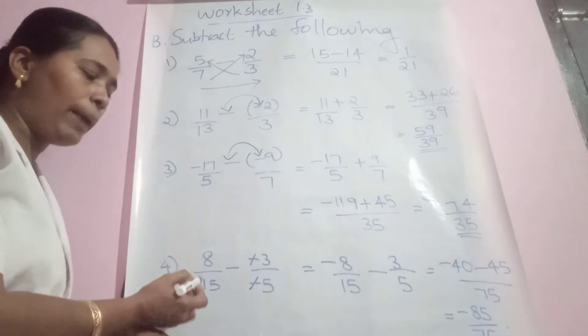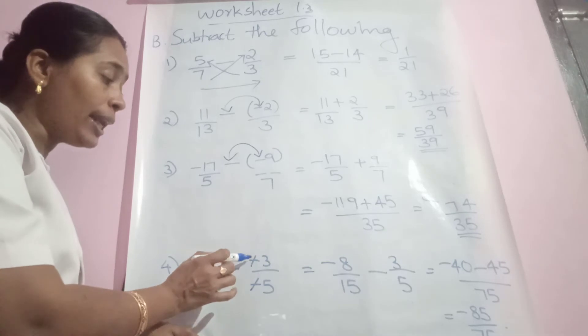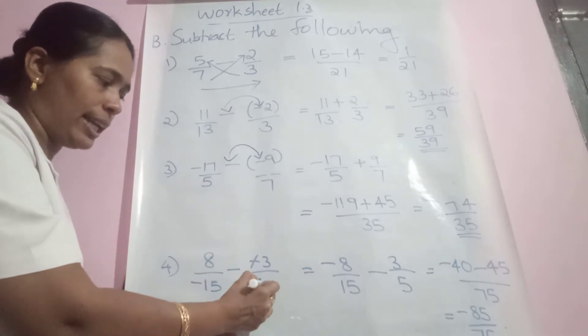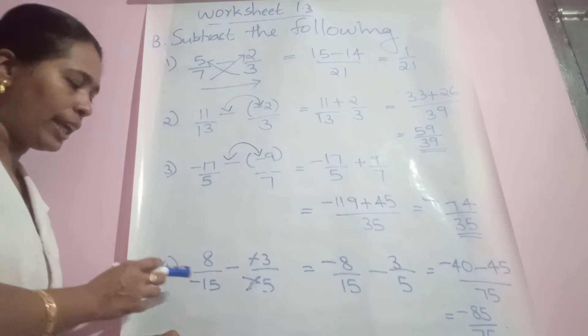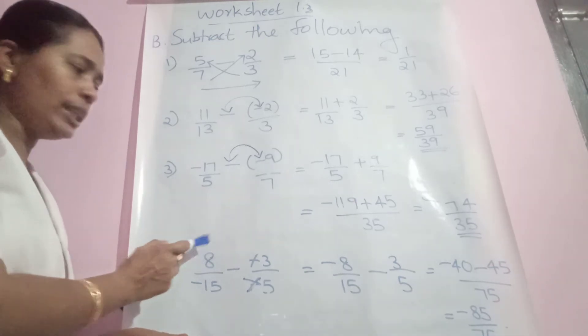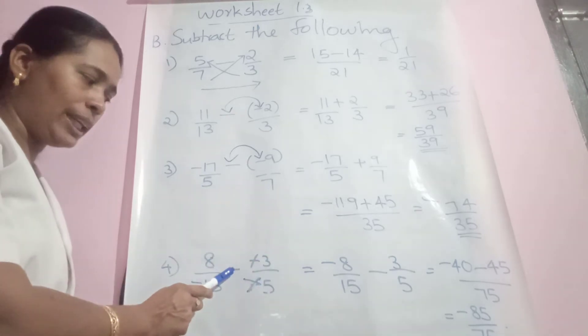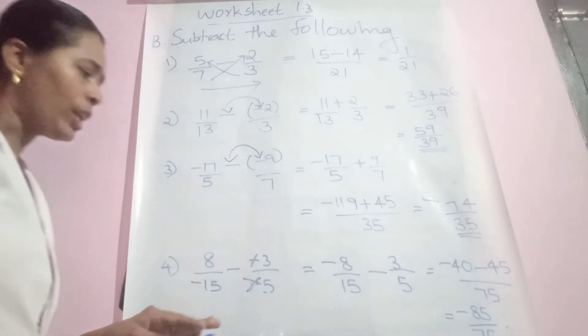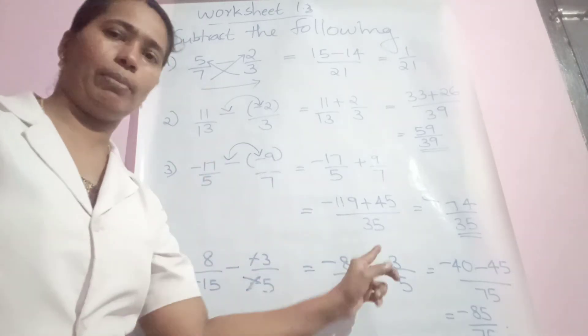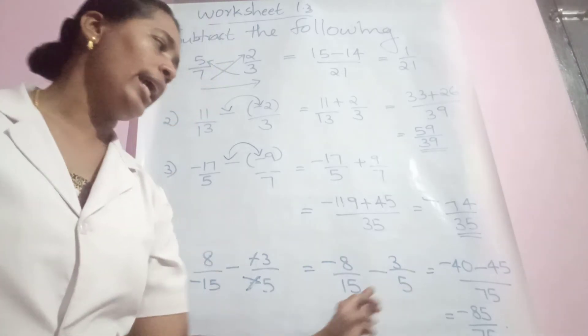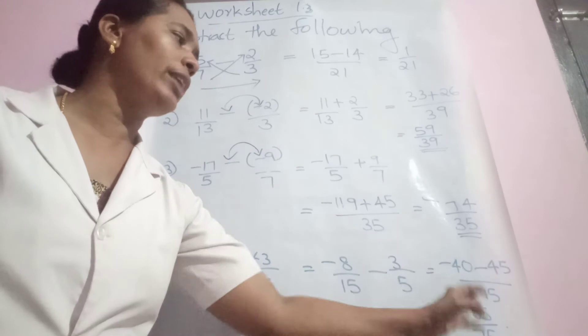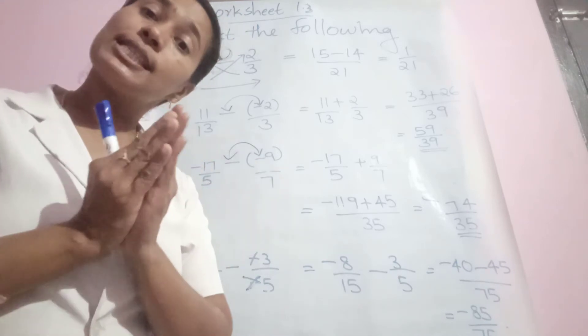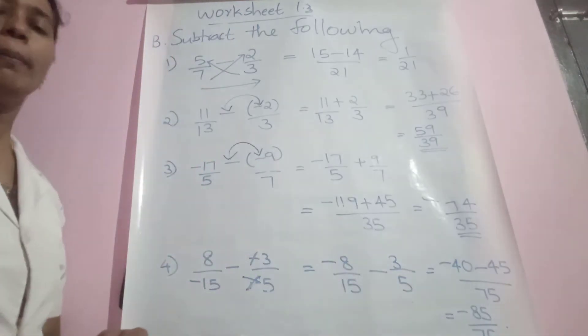Next question is 8/(-15) minus (-3/-5). Two negative signs are already cancelled. Let us cancel the two negative signs, and the negative sign on the denominator you can give to the numerator. So this number becomes -8/15. These also cancel because 3 and 5 have a negative sign, so we have 3/5 now. Cross multiply: negative 40 and 45 by 75. Both are same sign, belonging to the same negative group. So negative 85/75.